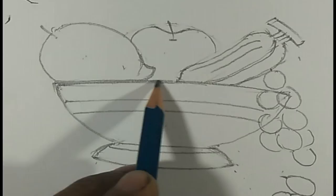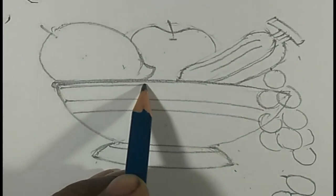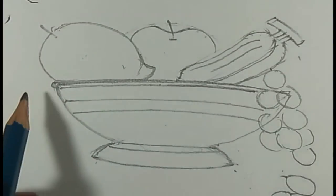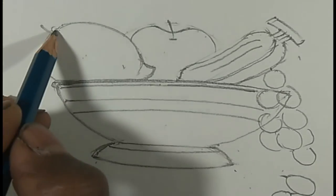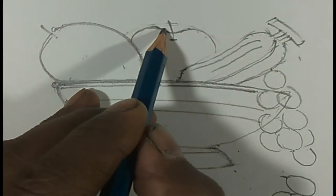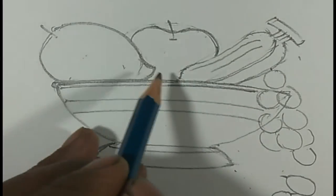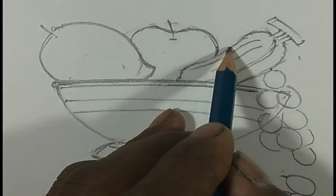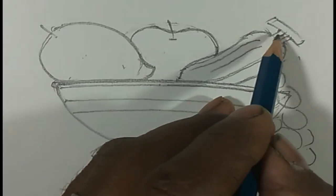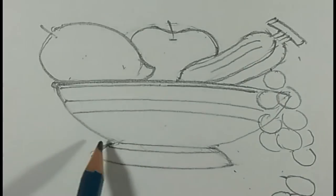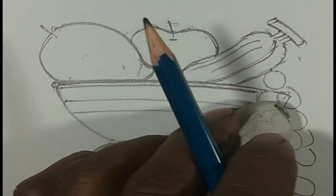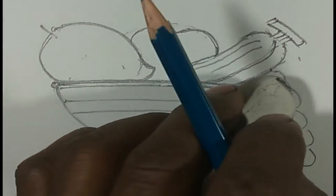Now this is the way by which we can draw a fruit basket. Make it dark, make it dark. The lines of the basket must be raised.